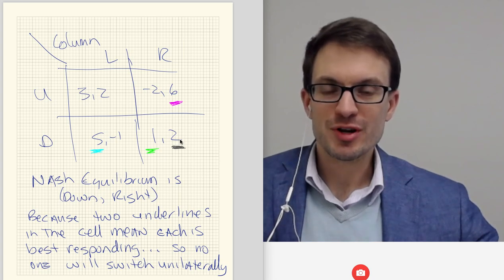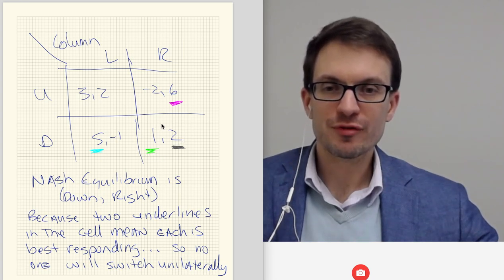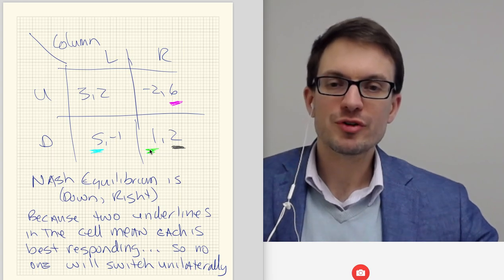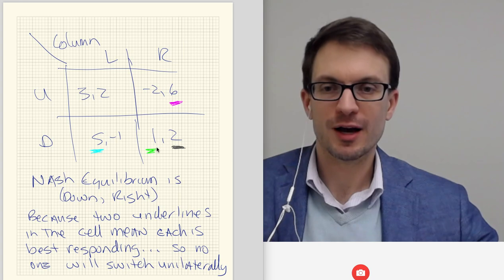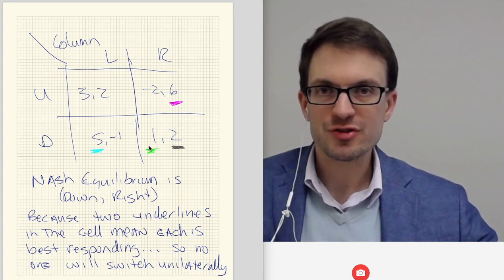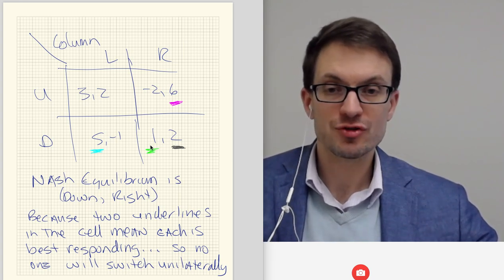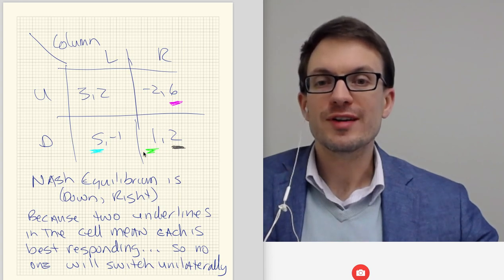Okay? So what's our Nash equilibrium? Well, to find a Nash equilibrium, we look for a cell that's got two underlines because the way that we are deriving these underlines is we are saying what was the player's best response. And remember the definition of the Nash equilibrium is no one wants to switch. So down-right is a Nash equilibrium.